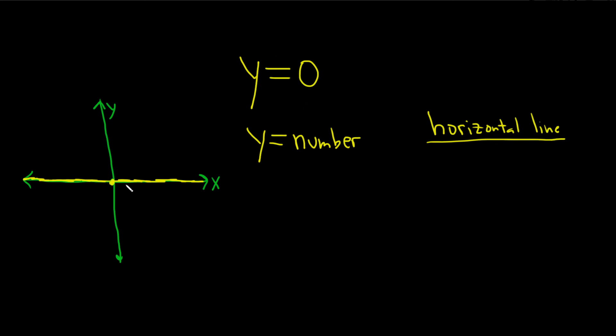There's no x here. So no matter what x you pick, your y value is always 0, so you end up getting infinitely many points along the x-axis, which is just the line y equals 0.